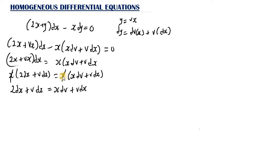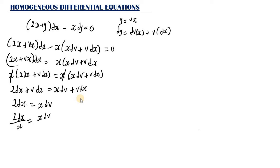Now we separate the variables by dividing both sides by s. So 2ds/s = s·dv/s, which gives us 2/s · ds = dv, with the s terms on the right cancelling out.